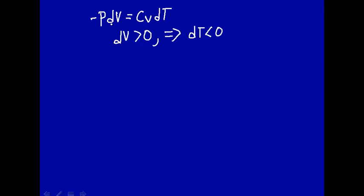this must mean that dt must be less than zero. That's a negative sign. So if that's greater than zero, this has to be less than zero. So pressure and heat capacity at constant volume are all positive numbers.